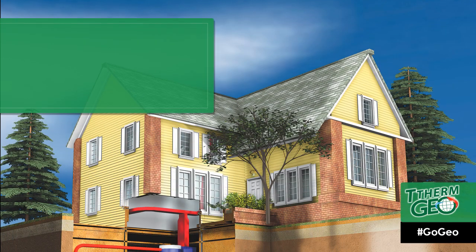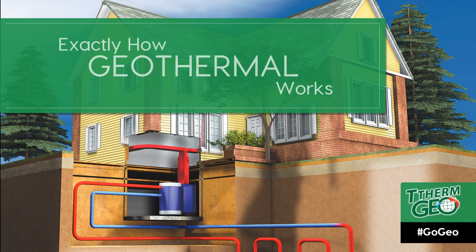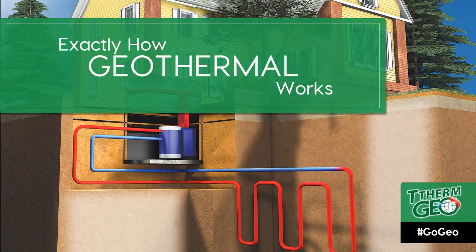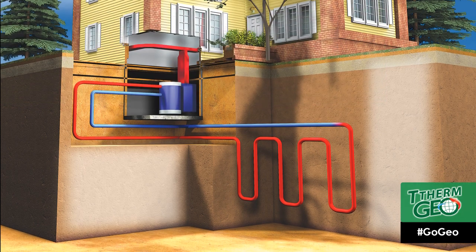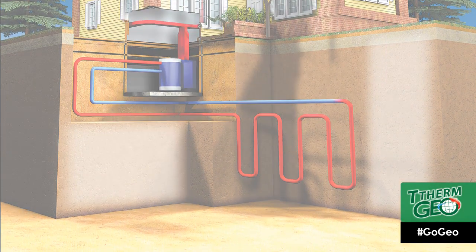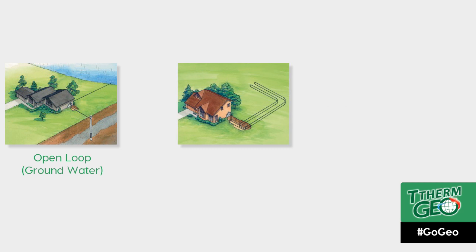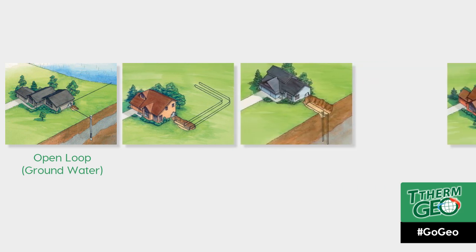In this video, we will explore the different configurations of geothermal energy systems and exactly how the technology works. There are multiple ways to configure and install a geothermal system's connection with the Earth. The Earth connection can be either an open-loop system, which uses groundwater, or a closed-loop system, which continuously reuses the same water antifreeze solution.